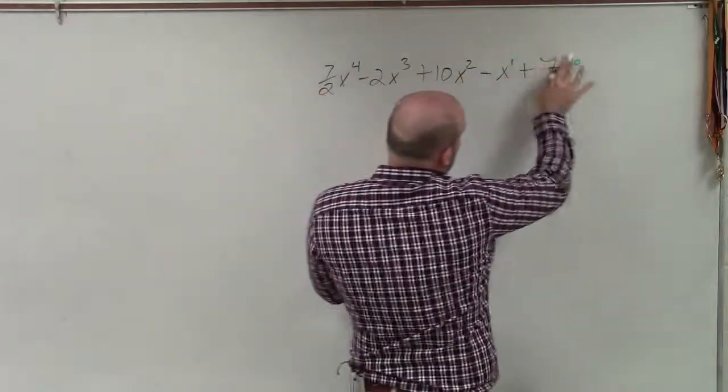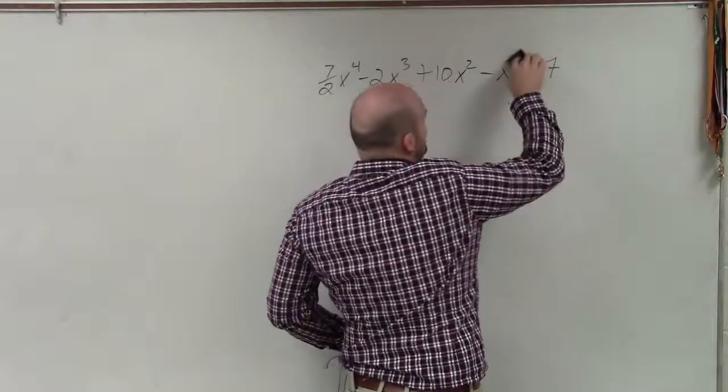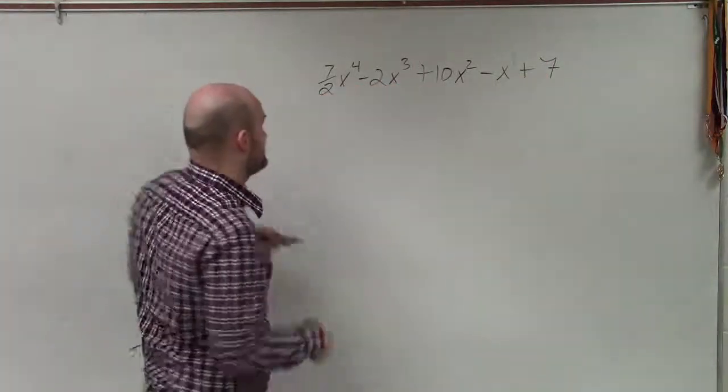You can see we go 4, 3, 2, 1, 0. So since we have that in there, we don't really need to include these x to the 0's and x. But it's nice to understand that they can be represented there.